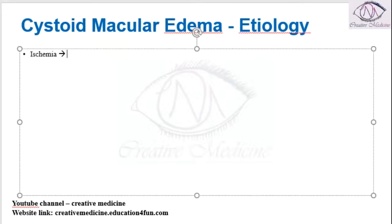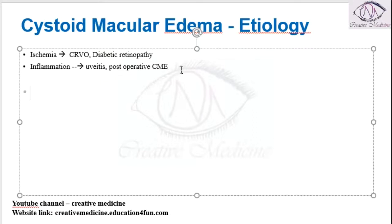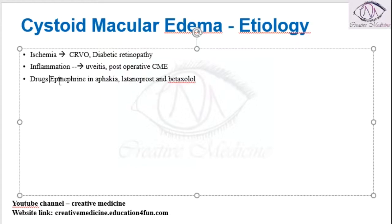The main etiologies of cystoid macular edema include ischemic causes such as central retinal venous occlusion and diabetic retinopathy. It can also occur due to inflammatory causes like uveitis, or post-operative cystoid macular edema, or due to drugs like epinephrine, which is used in aphakia.